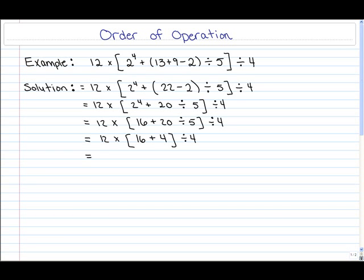In the next step, because we still have a bracket, we haven't evaluated absolutely everything in the bracket, we should do that first. You should have done 16 plus 4 next, which gives us 20, then divide by 4.